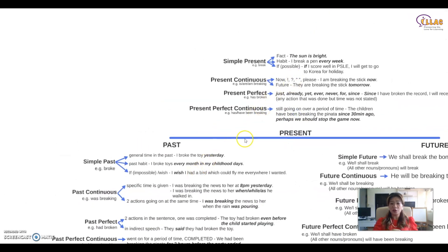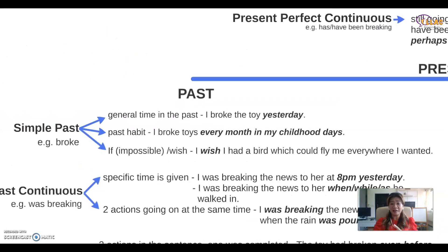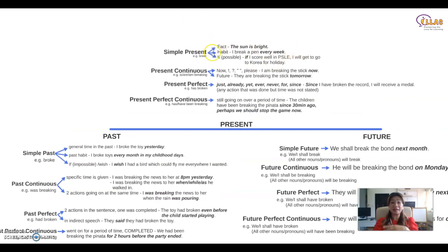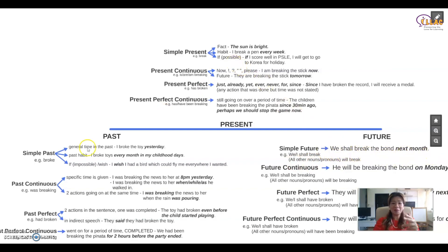Let's contrast again. General time in the past: use simple past tense. Time now: use simple present tense. General time in the future: use simple future tense — next month, next year, next week. To recap: simple present is for facts, habits, or if clause possible happening now. Simple past is for general time in the past, past habits, or if clause impossible. Simple future is for general time in the future, using 'will' or 'shall' plus the verb in base form. Use 'shall' with 'we' and 'I': 'I shall break the bond next month.' For all other pronouns or nouns, use 'will': 'Peter will break the bond,' 'He will break the bond.'